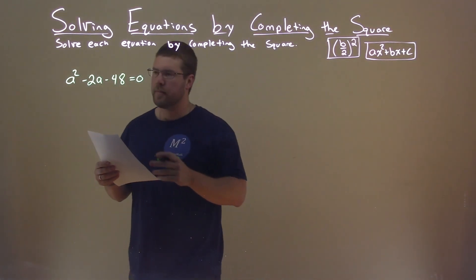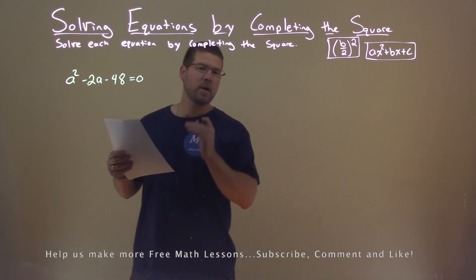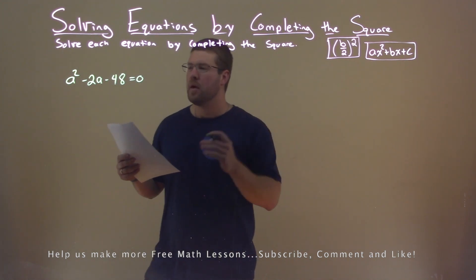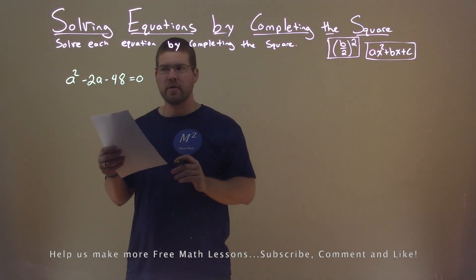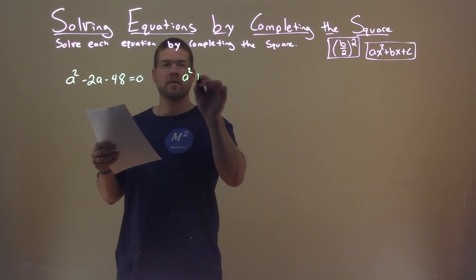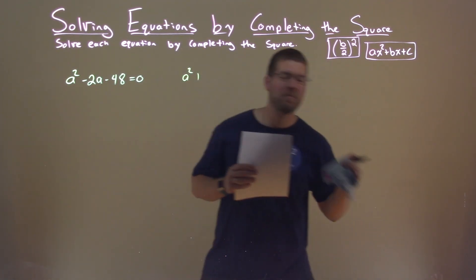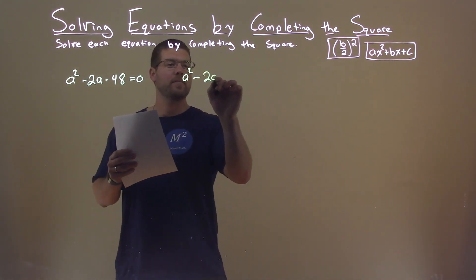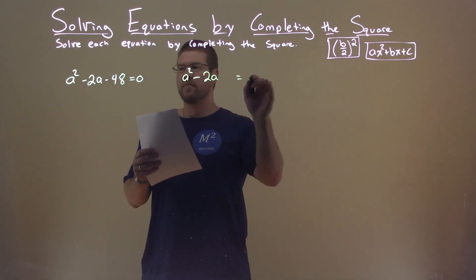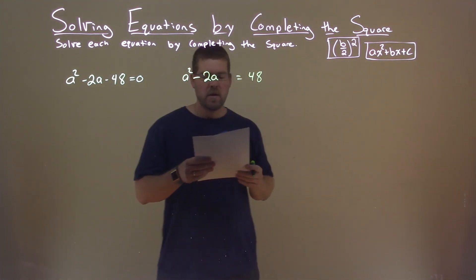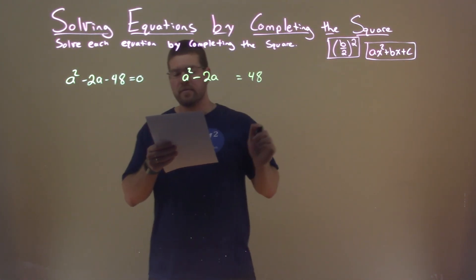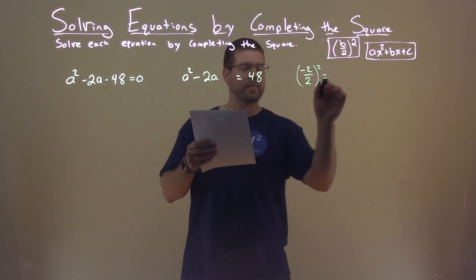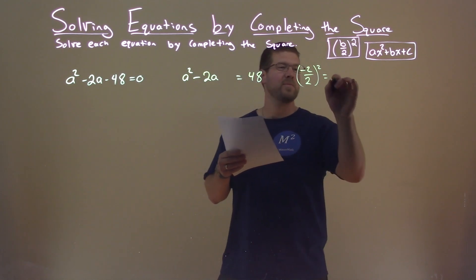We're given this problem right here: A squared minus 2A minus 48 equals 0, and we want to solve this by completing the square. First thing I'm going to do is add 48 to both sides, which gives me A squared minus 2A equals positive 48. Now I look at my B value, negative 2. I take negative 2, divide it by 2, and square it — that comes out to be a positive 1. So now I'm going to rewrite my equation: A squared minus 2A plus 1 equals 48 plus 1, adding that plus 1 to both sides.